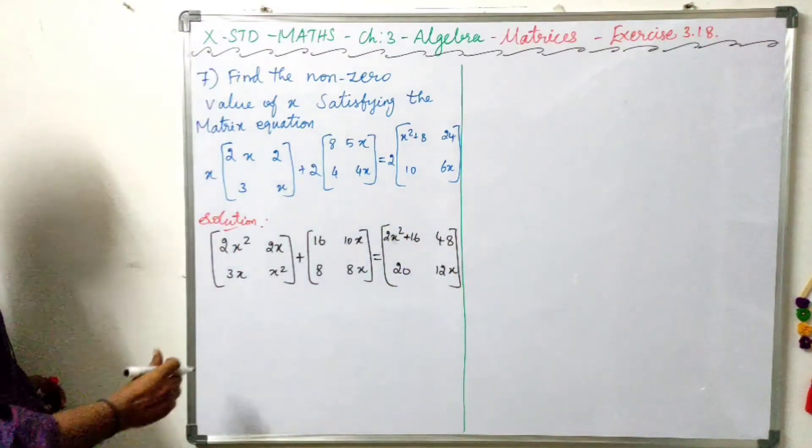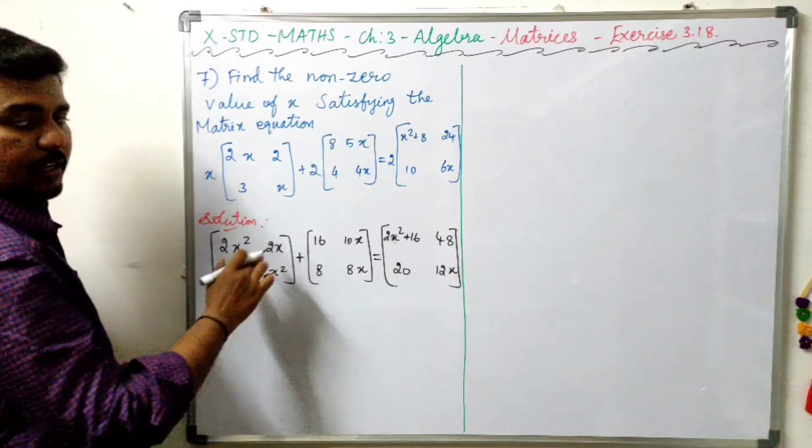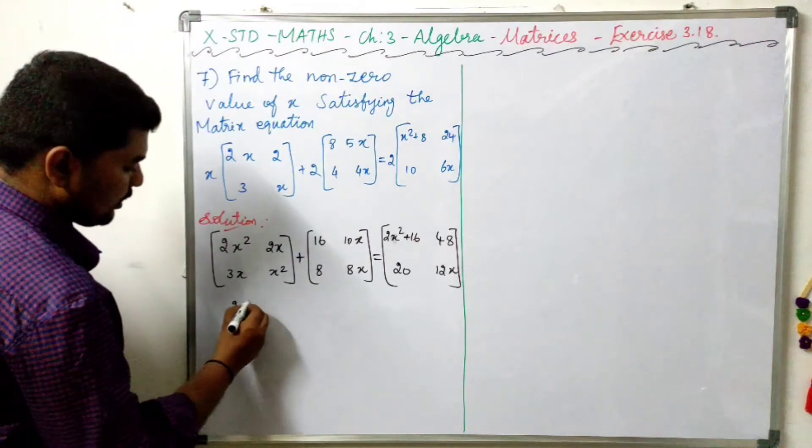So the next step is we will add the matrix. 2x square corresponding amount is 16. 2x square plus 16.